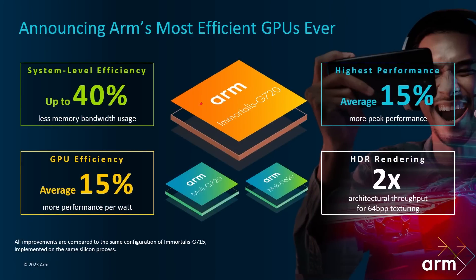So what do we get from the Immortalis G720? System-level efficiency is up by 40% — we'll talk more about what 'system level' means shortly. Less memory bandwidth usage is a key theme: every time you access main memory it costs power and hits performance, so reducing that bandwidth increases performance and reduces power. On average, there's 15% more performance per watt, 15% more peak performance, and for HDR rendering, two times architectural throughput for 64-bit-per-pixel texturing.